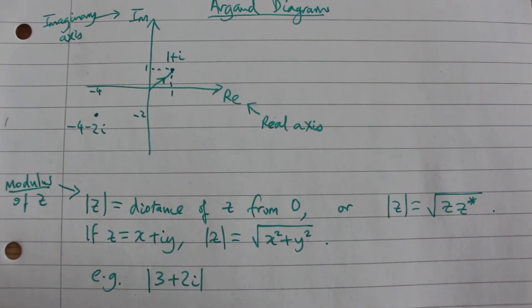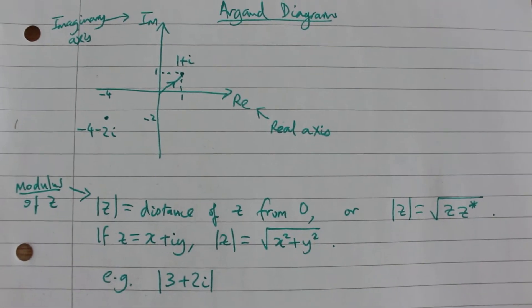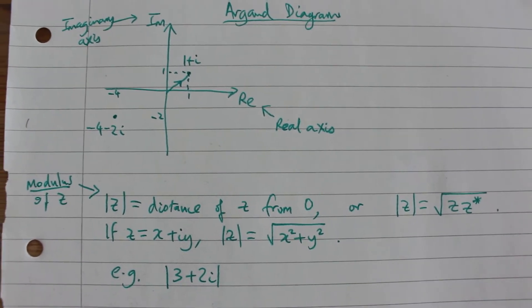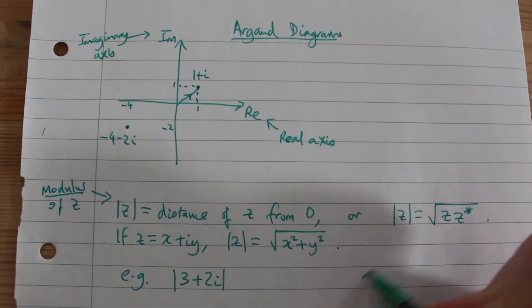And we know if z is x plus iy then the modulus is the square root of x squared plus y squared. And this also follows from Pythagoras' theorem.